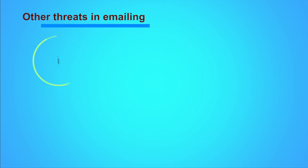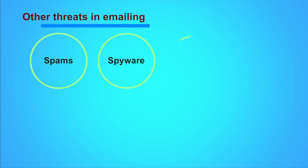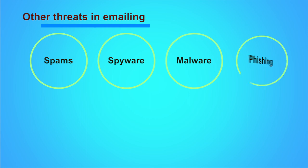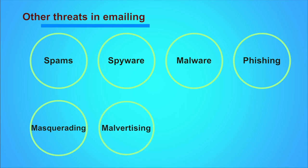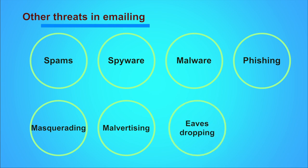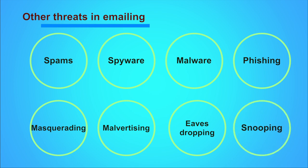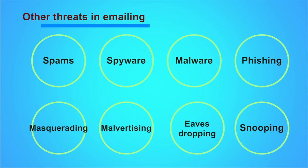Let us have a look at some indirect threats to emailing. Apart from security requirements like privacy, authentication, etc. discussed earlier, there are threats in emailing which have very different modalities of intrusion and are more serious. We will introduce you to certain threats or ways security breaches can happen in emailing. They are: spams, spywares, malware, phishing, masquerading, malvertising, eavesdropping, snooping, etc.